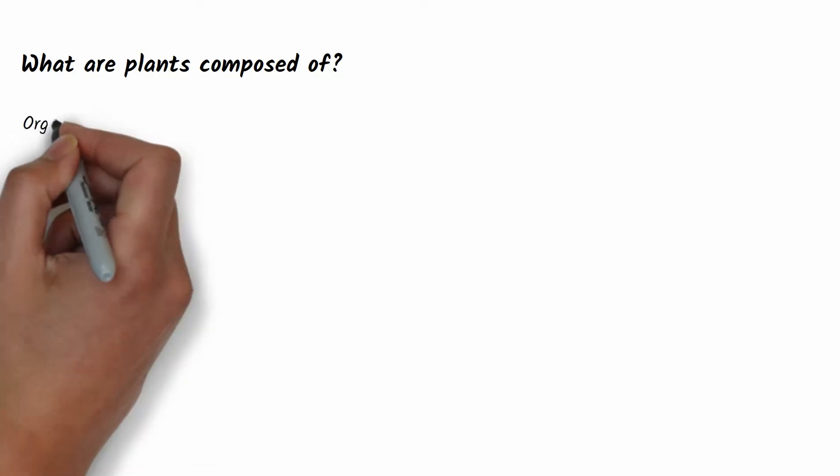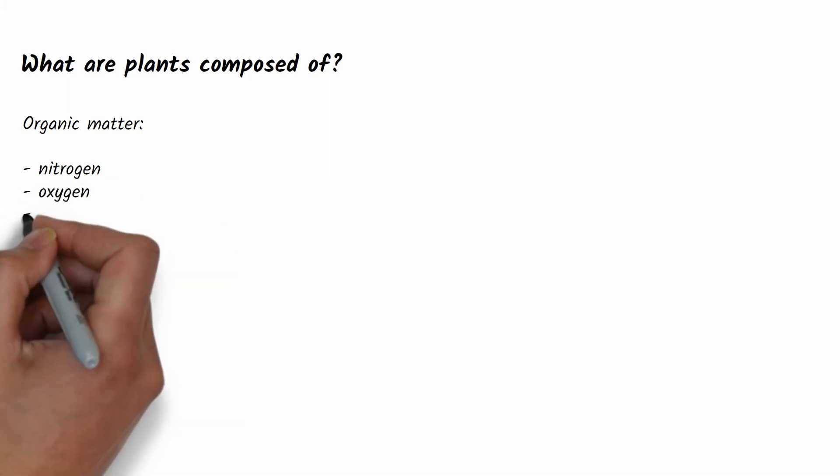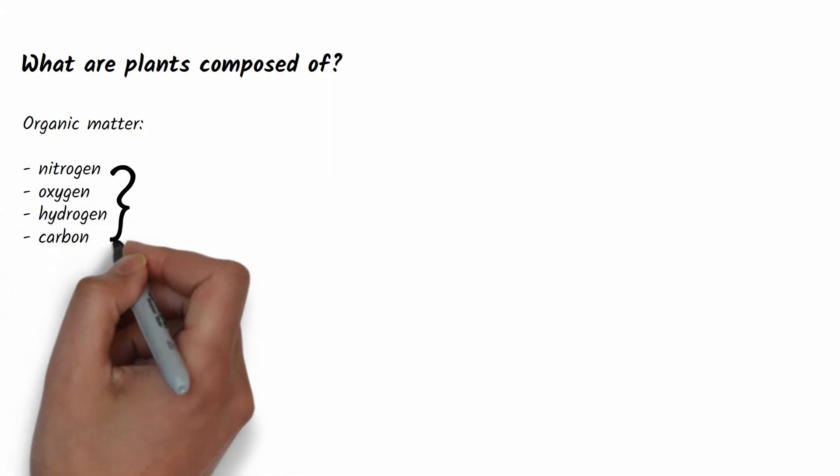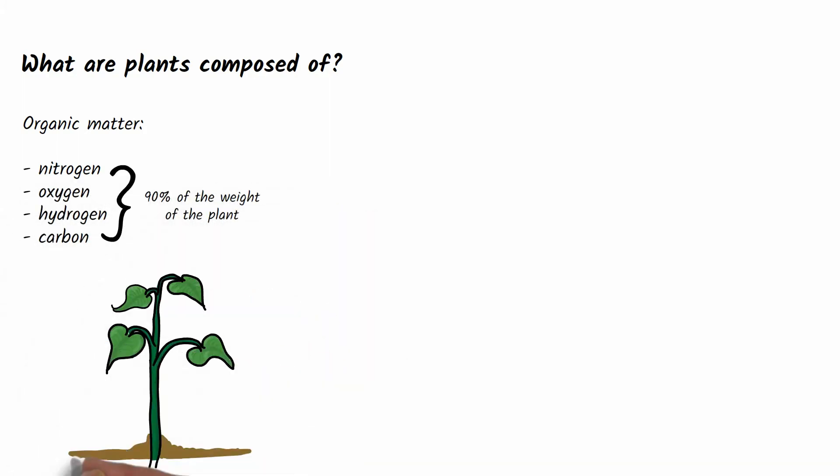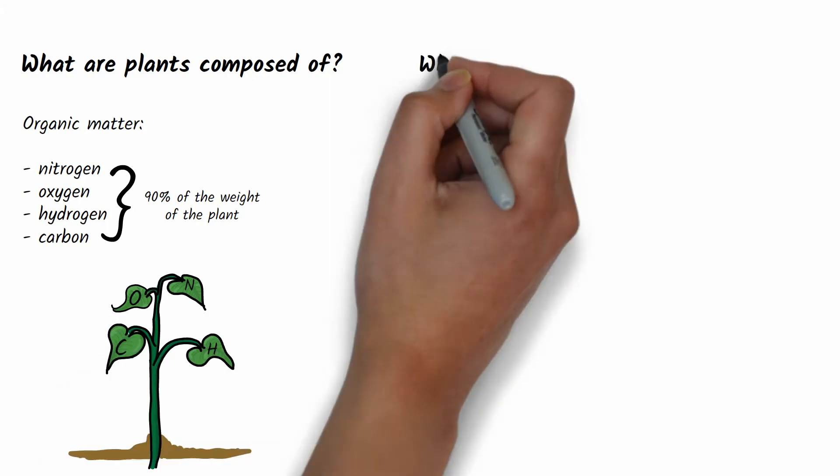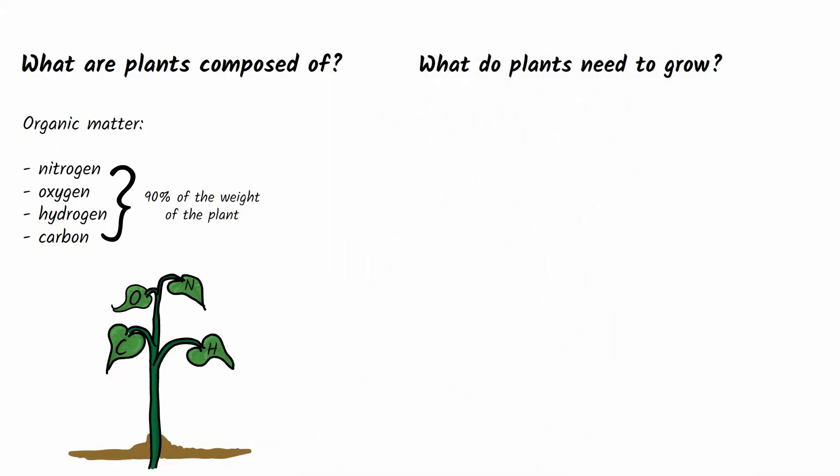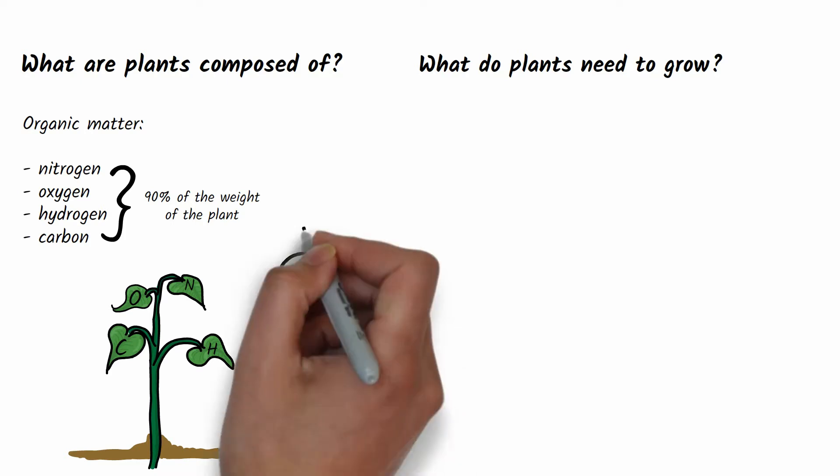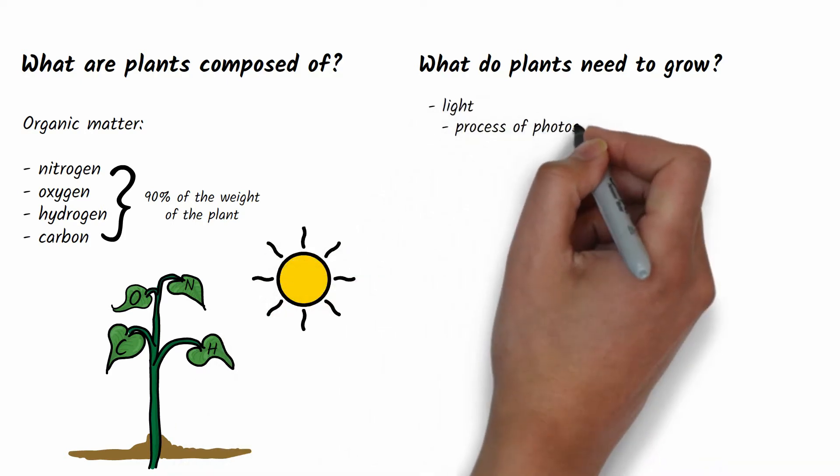In order to understand how to properly nourish and take care of plants, let's take a look at what they are made of. Like other living things, plants consist of organic matter which is made up of nitrogen, oxygen, hydrogen, and carbon.